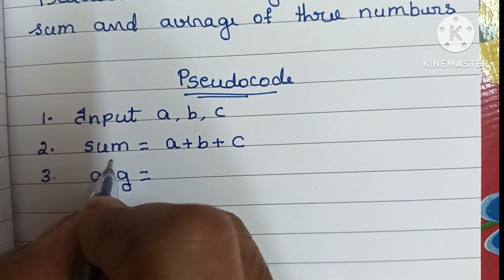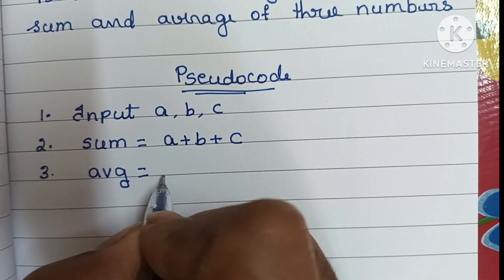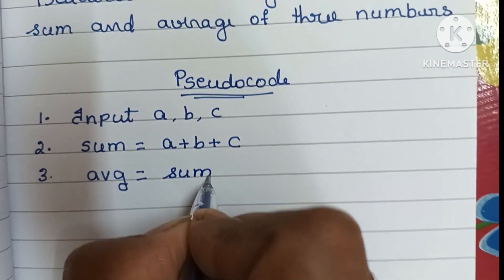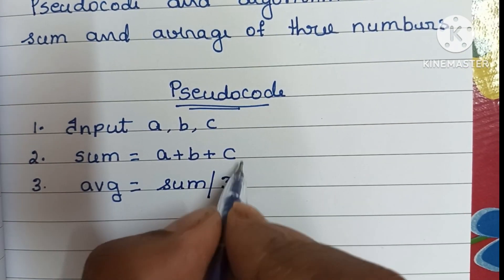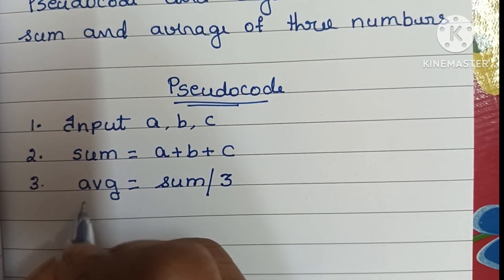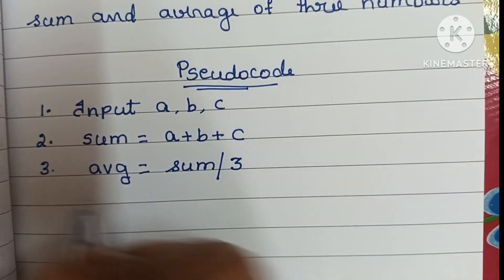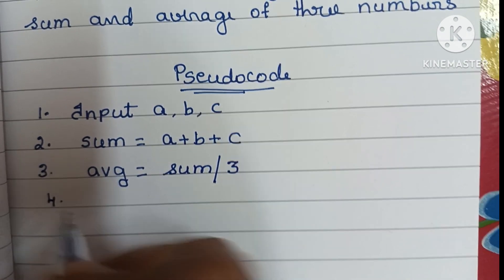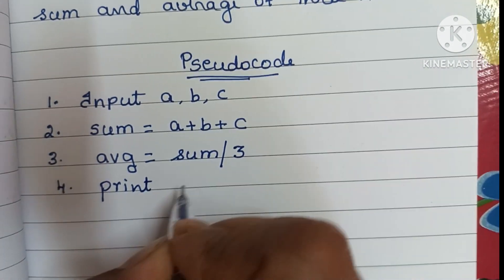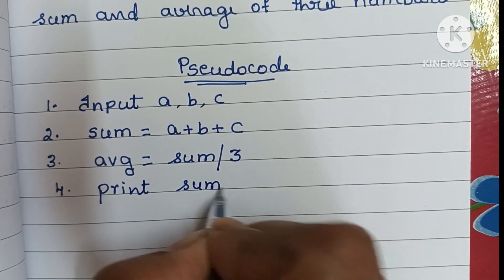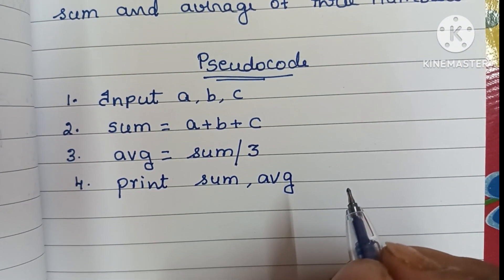To find the average of three numbers, we have to find the sum of the numbers divided by 3. The formula is: average equals sum divided by 3. Since we already found the sum, we directly apply average equals sum divided by 3. Next, we have to print the output values — that is sum and average.